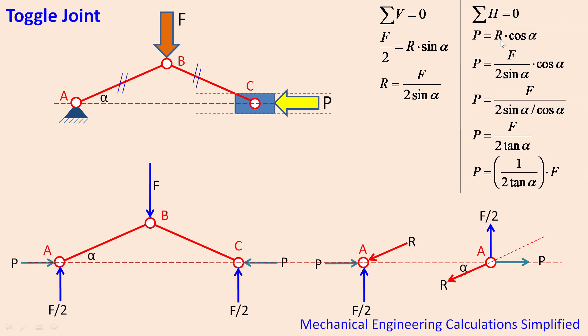So the horizontal component, if you do horizontal force balance, the horizontal rightward force P is balanced by horizontal leftward force R cos alpha. In same way if we do vertical force balance, the vertical force F by 2 is balanced by a vertical component of reaction R that is R sin alpha.